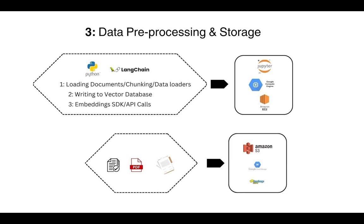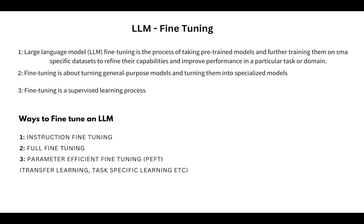So that was the high-level architecture and flow of LLM using RAG or grounding. Now let's move on to model fine-tuning. Fine-tuning is the process of taking a pre-trained model and training it on specific datasets to refine its capabilities and improve performance in a particular task or domain. It's a supervised learning process, meaning you will have to provide the model with examples containing the input prompt as well as the output text or labels. That's why it's called supervised learning — the same concept as supervised learning for data science models.